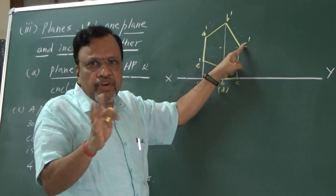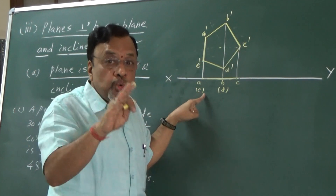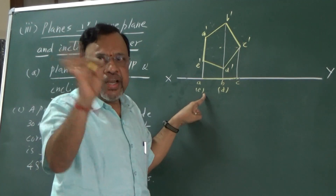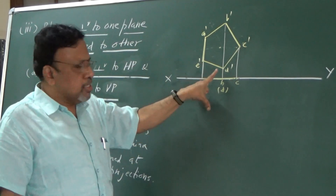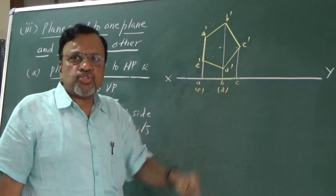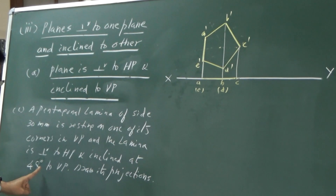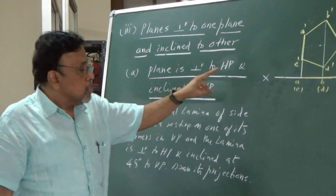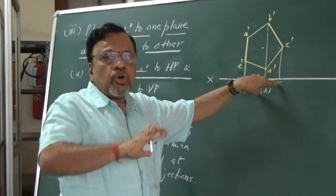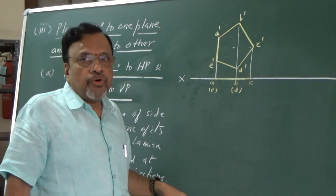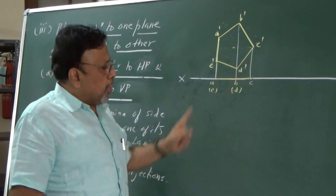So this is my top view. If you do it in a particular fashion, the chances of making a mistake are very low. This is the stage 1. Now, stage 2: the lamina is inclined at 40 degrees to VP. Since the lamina is seen as a line in the top view, I need to redraw the top view such that the lamina is inclined at 40 degrees to VP.